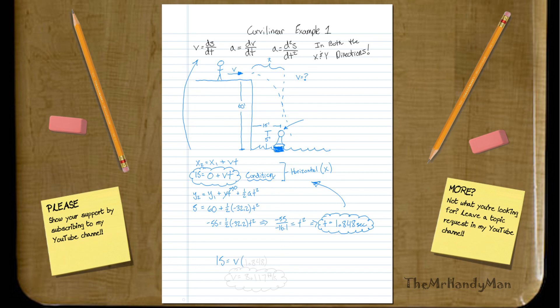which we know gravity is going to drop us down to that height, the height of the buoy, in 1.848 seconds. So then we use that, and we can determine that V will equal 8.117 feet per second. And that's how quickly he would need to run.